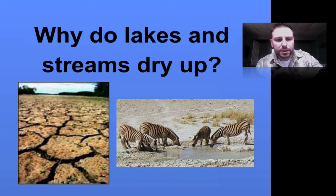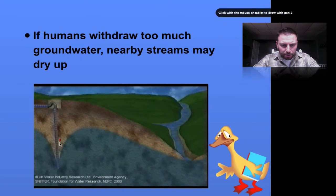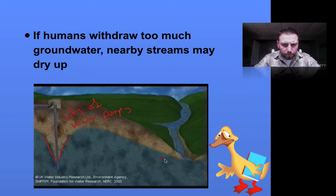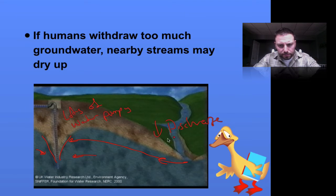Occasionally though, what we may see is that lakes and streams do dry up or their discharge drops down. A couple of scenarios are going to cause this. If we extract too much groundwater, like in this diagram here — we have this nice pump with a huge cone of depression, so there's lots of pumping going on — it'll cause our groundwater to flow into this well area, causing our stream to basically feed the groundwater flow and feed our well. This will decrease the discharge or the volume.